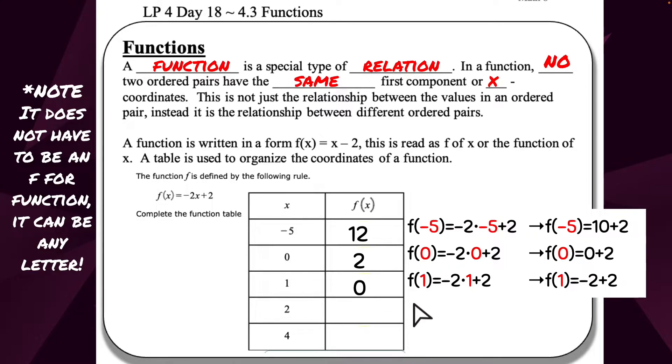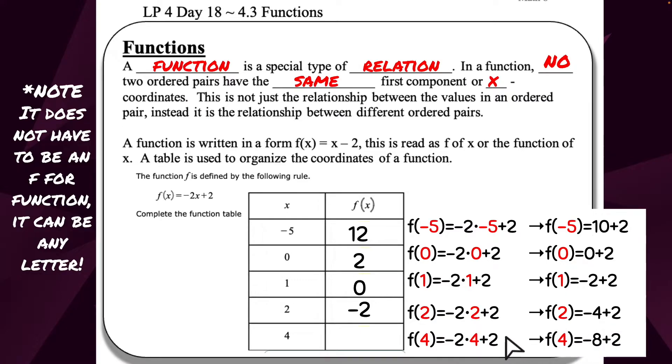Now we're going to do 2. Negative 2 times 2 plus 2. Negative 2 times 2 is negative 4. Plus 2 is negative 2. Last one, we have negative 2 times 4, so we get negative 8. Plus 2, we get negative 6.